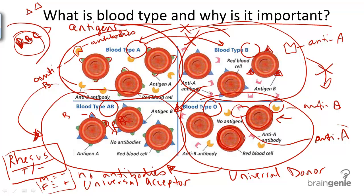So, do you know what type of blood you have? You could probably determine your blood type by using a simple monohybrid cross if you knew your parents' blood types, or simply go get a blood test to find out.